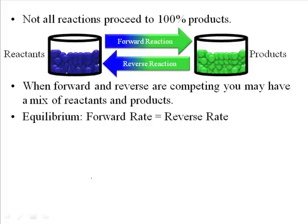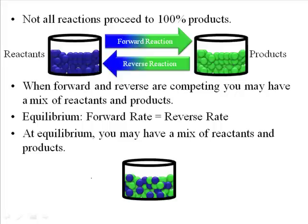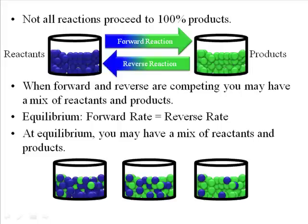That equilibrium does not necessarily mean you have equal amounts. There will be scenarios where you have a mix of reactants and products at equilibrium, and sometimes it might seem like you've got roughly equal amounts. But many other times, one side of the equation will be favored — you might have more products than reactants, or mostly reactants and only a little bit of products.